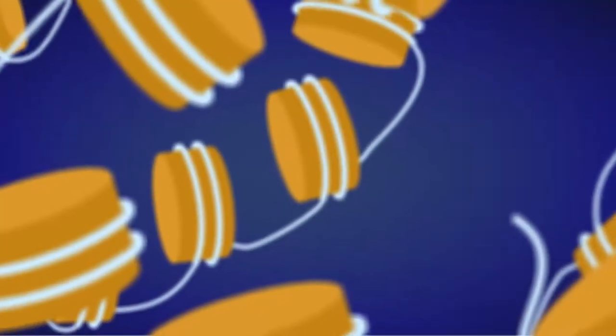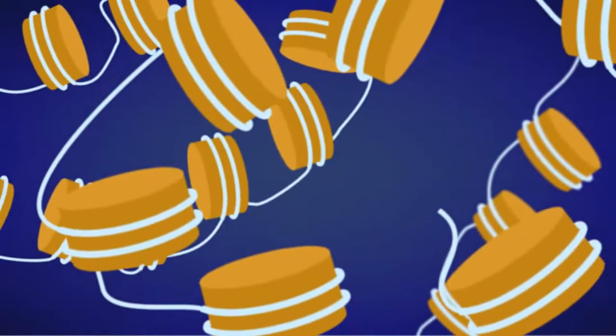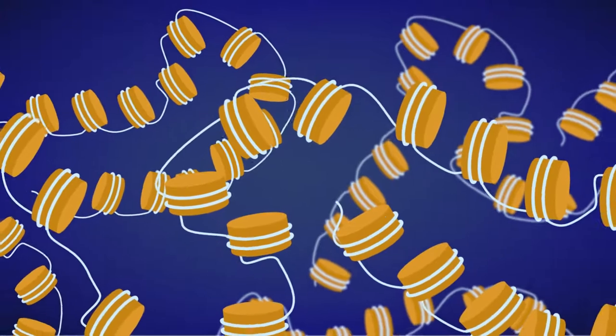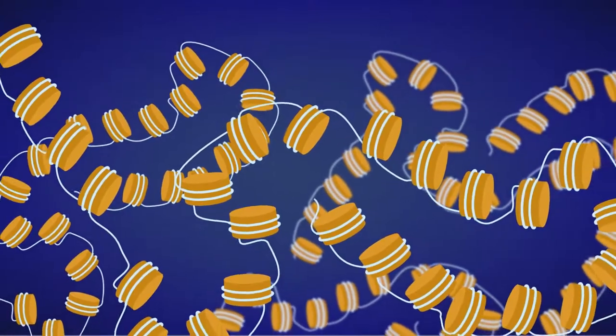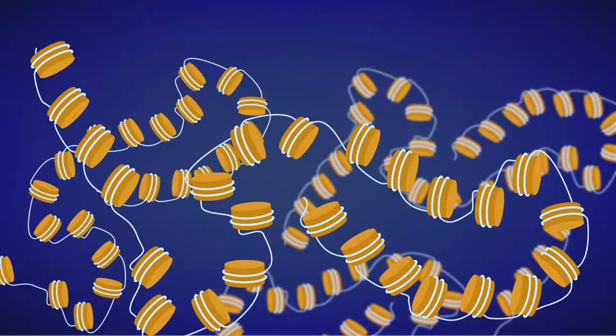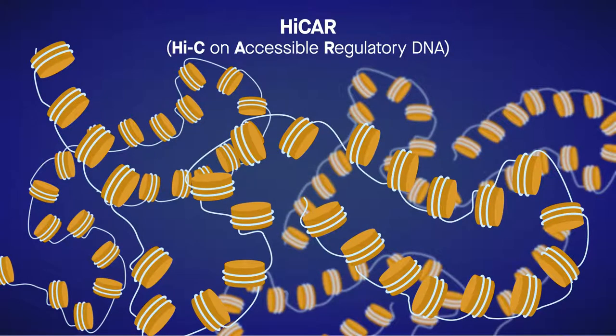Now, a new method of probing these regions could help scientists gain more information from much less starting material and, in the process, help us learn more about the book of life. The technique is called HICAR, short for Hi-C on Accessible Regulatory DNA.